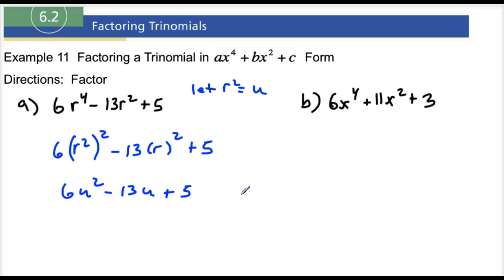And then plus 5. Okay, so again, we haven't changed the problem. All I do is I'm just letting u equal r squared, but it's still the same problem. So again, just like last example, let's factor this, and then once you're done factoring that, then you just replace all of the u's with r squared.